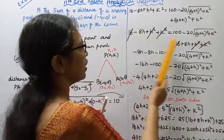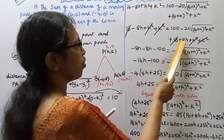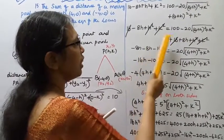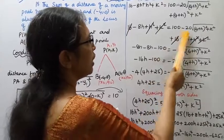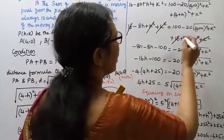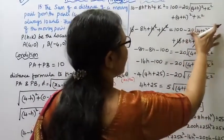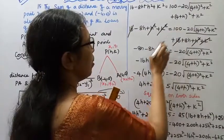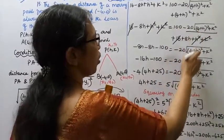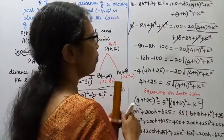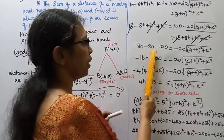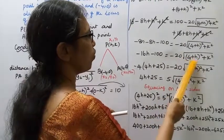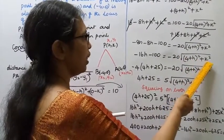Simplifying: the h squared and k squared terms cancel from both sides. On the left: 16 - 8h. On the right: 100 + 16 + 8h - 20 times root of (4 + h) squared plus k squared. Collecting like terms: -8h minus 8h minus 100 equals minus 20 times root of (4 + h) squared plus k squared, giving -16h - 100 equals -20 root of (4 + h) squared plus k squared.